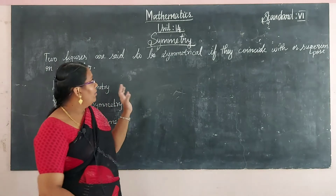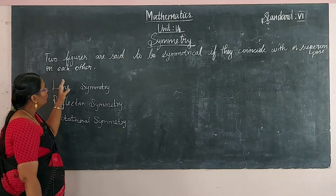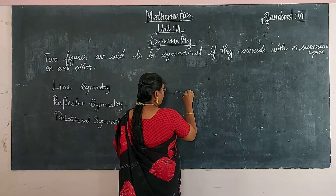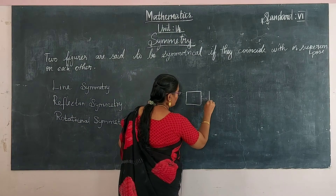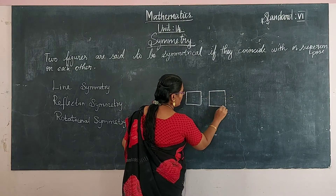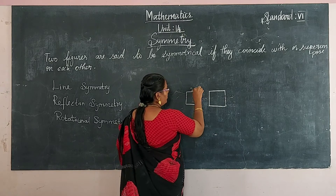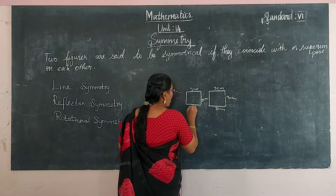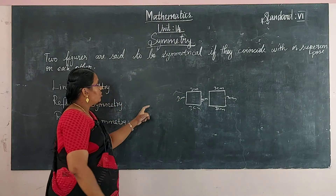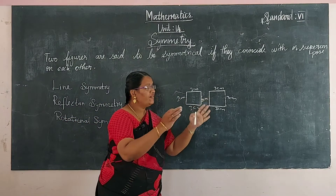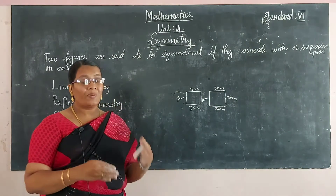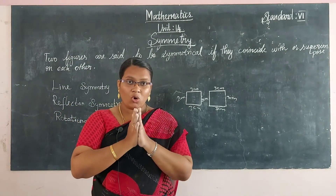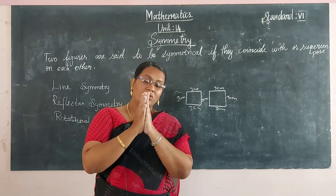Today we will learn briefly about symmetry. In general, two figures are said to be symmetrical if they have the same size and same shape. These two are called symmetrical if they coincide with each other in superimposition — that is, one object completely coincides with the other object.